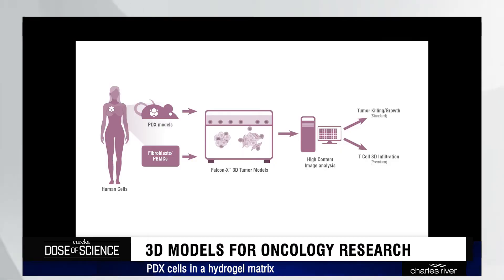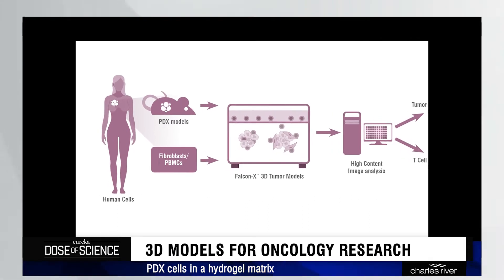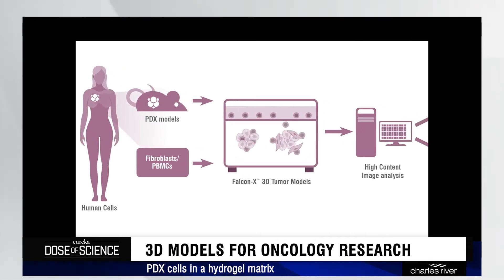Currently we utilize the patient-derived xenograft cells — the PDX tumor cells — as well as fibroblasts and immune cells from PBMCs. We're also interested in using tumor-infiltrating lymphocytes derived from tumor ex vivo tissue, as well as more heterogeneous mixtures of cell types. We hope to expand to macrophages or other immunosuppressive cells, as well as client-specific cell therapies like CAR-T, and we're also considering non-oncology disease models in the future.